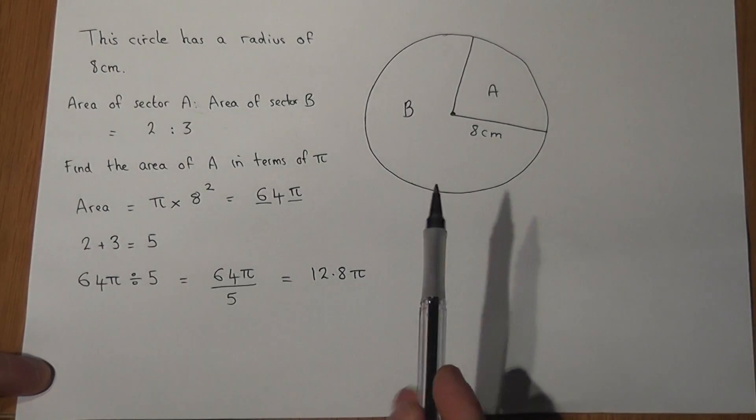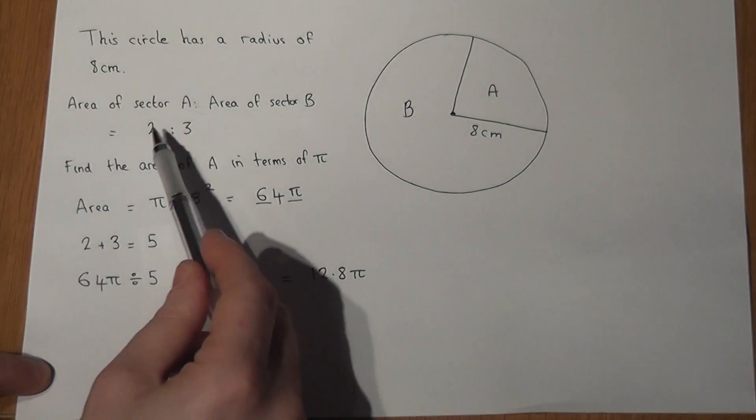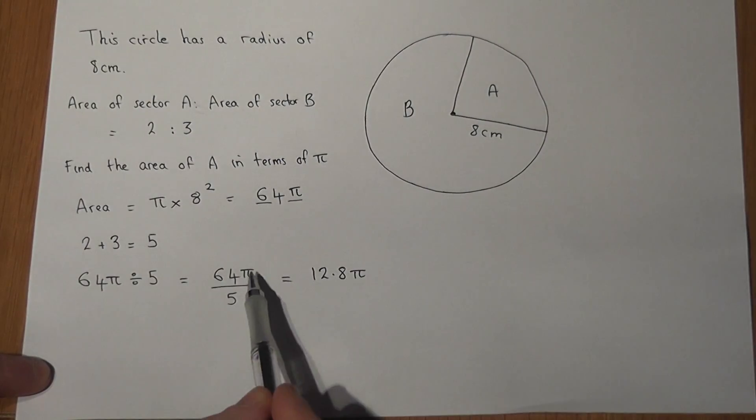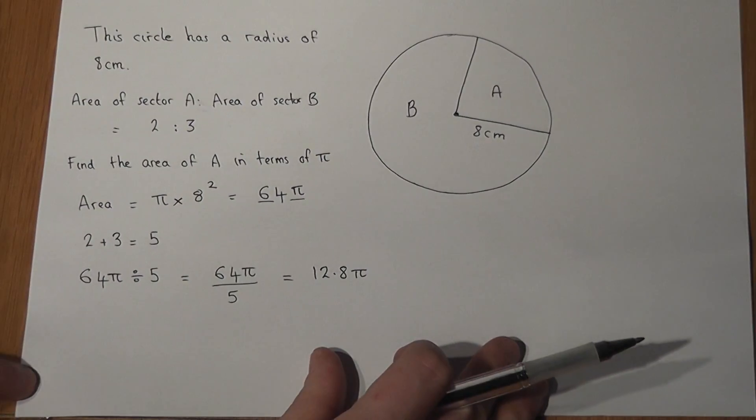So the whole area was 64π. 2 plus 3 is 5, so one fifth of the entire area is 64π over 5 or 12.8π.